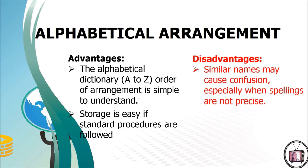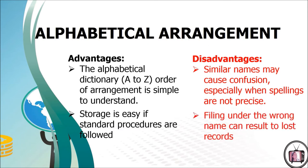The disadvantages of this filing arrangement are that similar names may cause confusion, especially when spellings are not precise. Filing under the wrong name can result in loss of records. In setting up a new system, it is difficult to estimate how much space is to be allowed for each letter of the alphabet. If the number of records increases, extensive rearrangement of guide cards and files becomes necessary. Alphabetical classification is not always the fastest system, as it takes a long time to find papers in large organizations. Dead files removed from the system leave gaps which cannot be filled except by correspondence bearing the same or a very similar name.